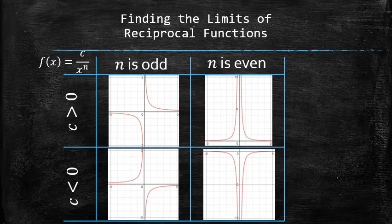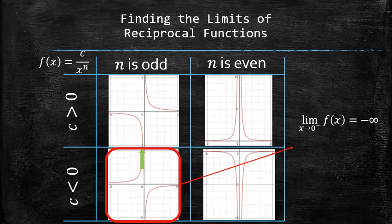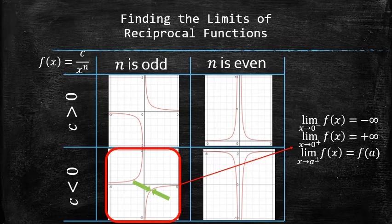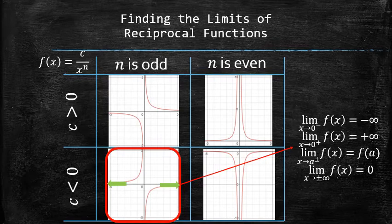The behavior of a reciprocal function with a negative coefficient and odd degree in the denominator can be described with the following limits: f approaches positive infinity as x approaches 0 from the left, and f approaches negative infinity as x approaches 0 from the right. For any point other than 0, f approaches its output at that point, because reciprocal functions are continuous everywhere except 0. And f approaches 0 as x approaches positive or negative infinity.